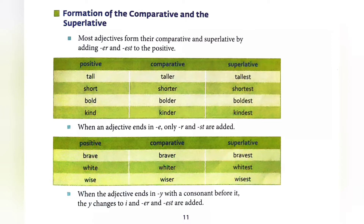Formation of the comparative and the superlative. Most adjectives form their comparative and superlative by adding -er and -est to the positive. For example, positive में tall है, तो वो comparative में taller हो जाएगा, वैसे ही superlative में tallest हो जाएगा.